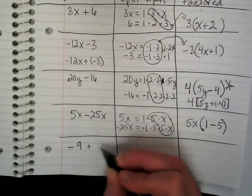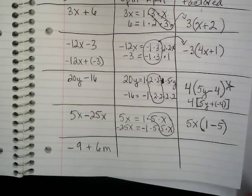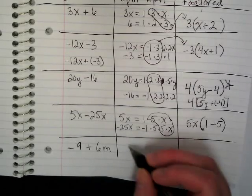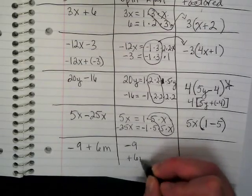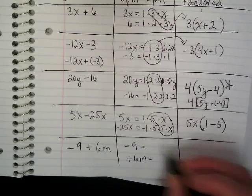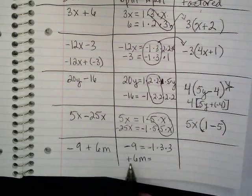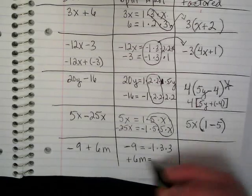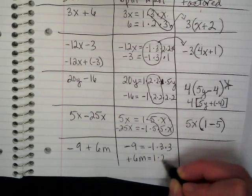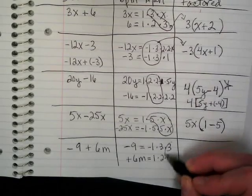Last one. Negative 9 plus 6m. I don't usually use something other than x or y, but you might see an m or a z. There's all sorts of other variables that could be out there. Still, we just break this up into its two terms. We break those terms into their parts. I put the plus 6m down here just to show it is positive. If we have a positive in the middle, we can keep it here or not. 1 times 2 times 3 times m.